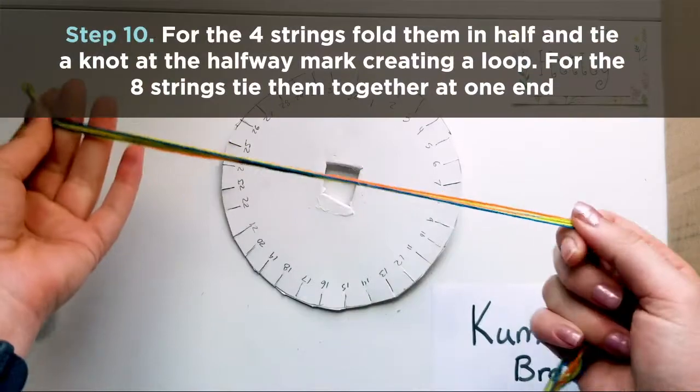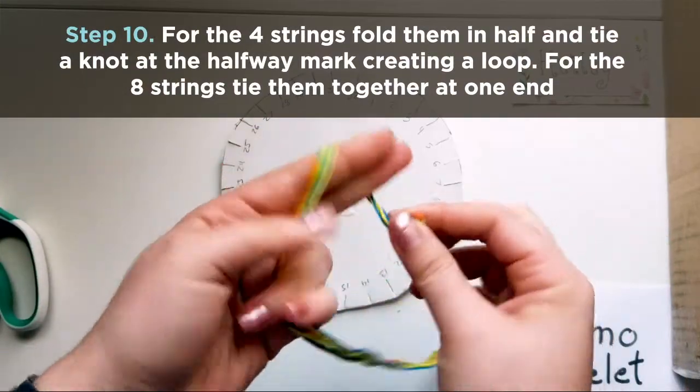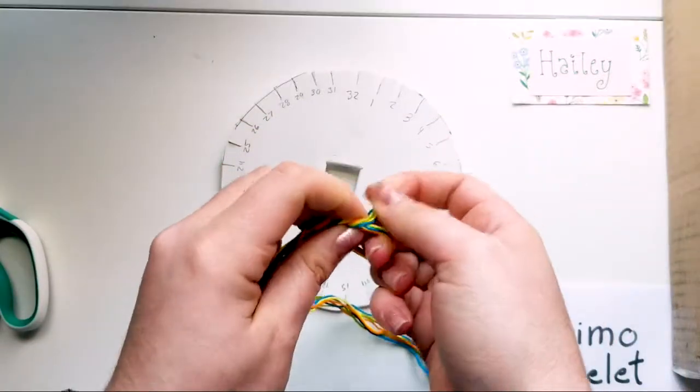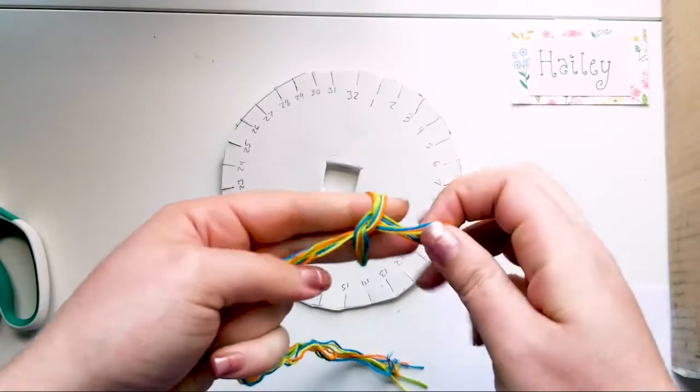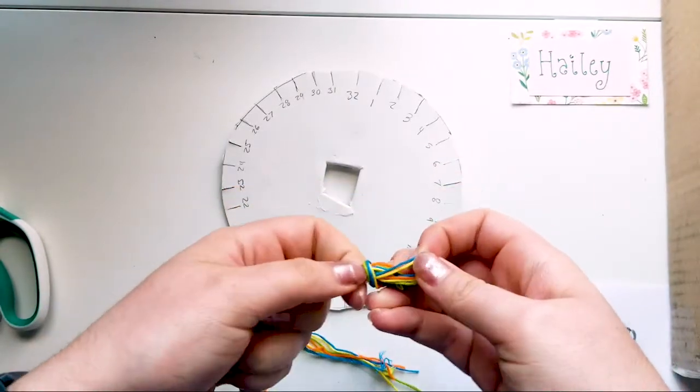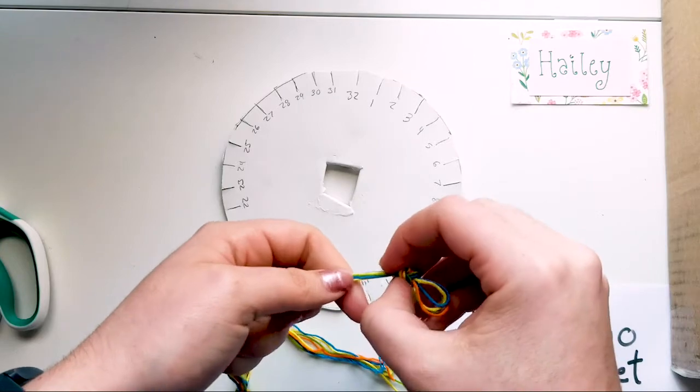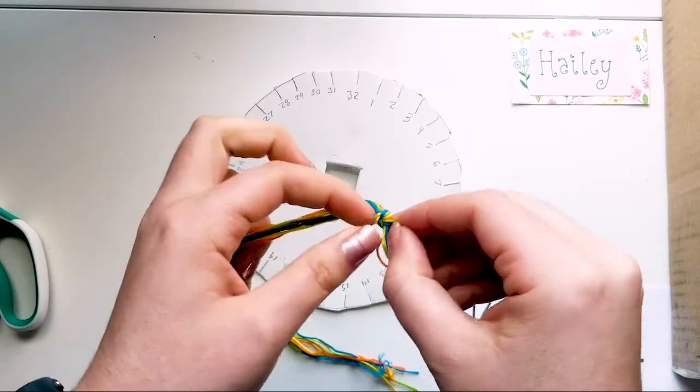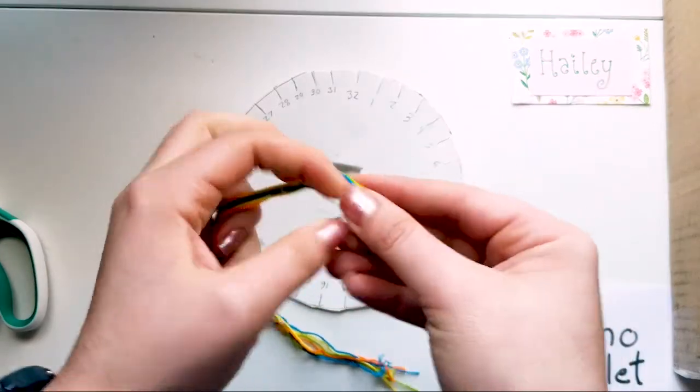So the first thing I'm going to do, I'm going to fold it in half. I'm going to tie a knot at the end to keep all the strings together. So I tend to use this loop when I'm tying this bracelet onto either myself or friends. So I like to leave it big enough that I can kind of get my finger through it, but not huge.